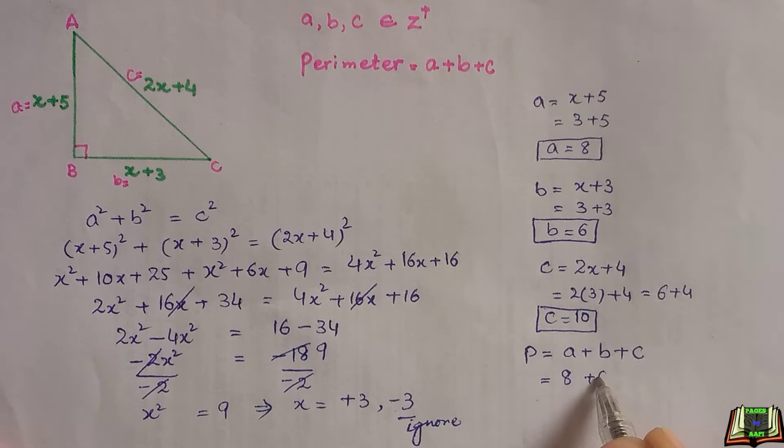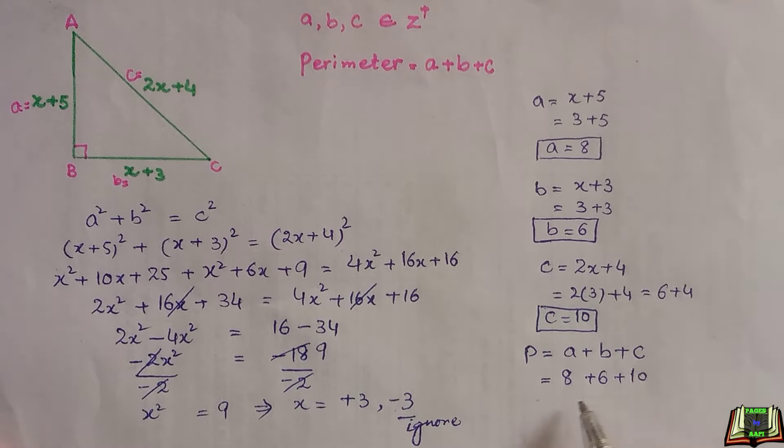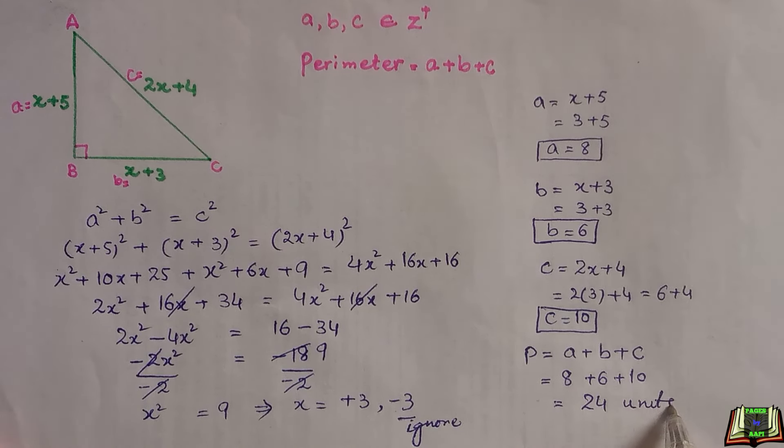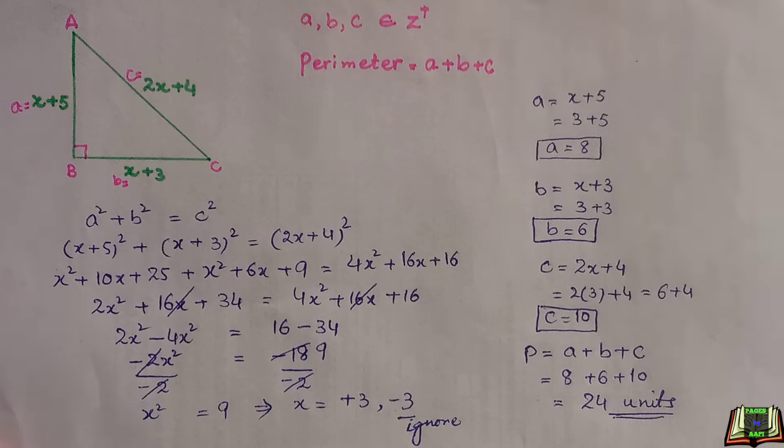Putting the values of a, b, and c: a is 8, b is 6, c is 10. Adding all these three sides we have 24. 24 units is the perimeter of this right angle triangle.